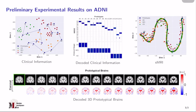We further report the preliminary experimental results on the ADNI dataset. Firstly, we visualize the latent space of the clinical information. We could observe that the prototype units follow the progression of the neurodegenerative disease. As we have a way to decode back the clinical information, we also plot the decoded clinical stage as well as the MMSE as the cognitive score. Here, the trend of the progression is more apparent. Lastly, a set of generated prototypical brains are reported in the figure below. The prototypical brains are in 3D shapes; however, we just plot the coronal slice to save space.